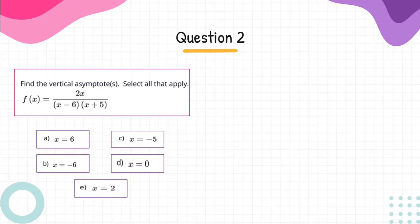Question 2: Find the vertical asymptotes. Select all that apply. f of x equals 2x over x minus 6 times the quantity x plus 5.